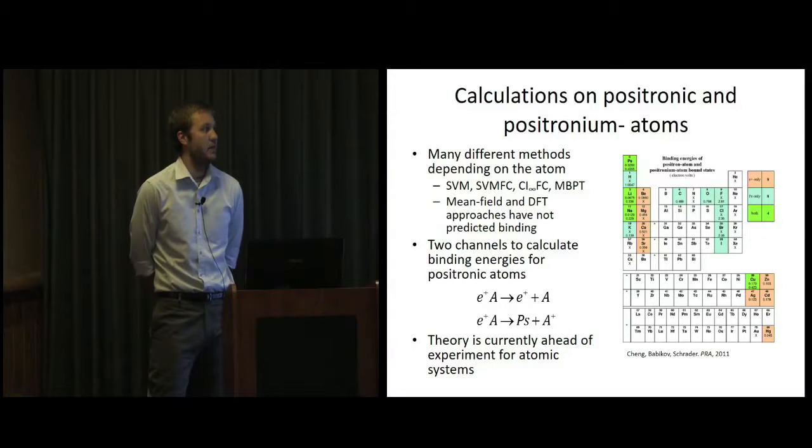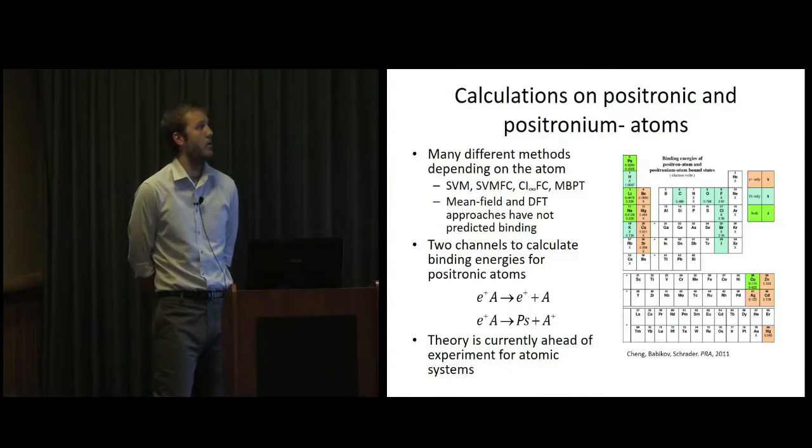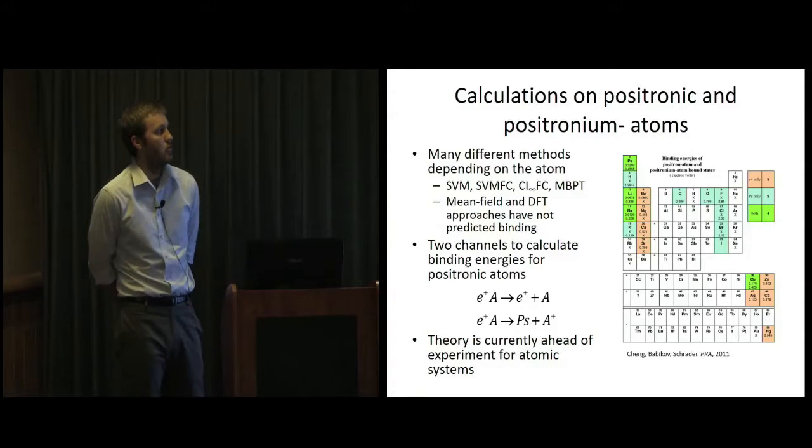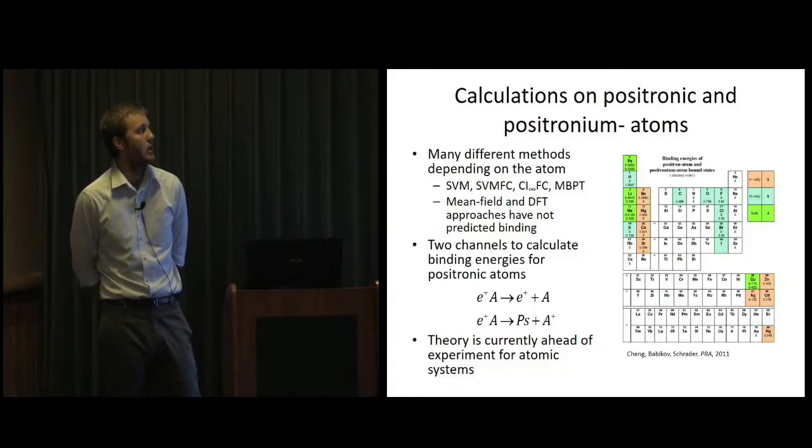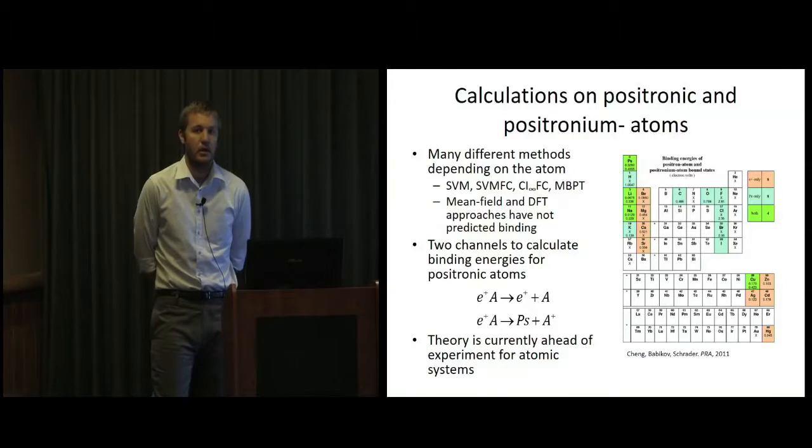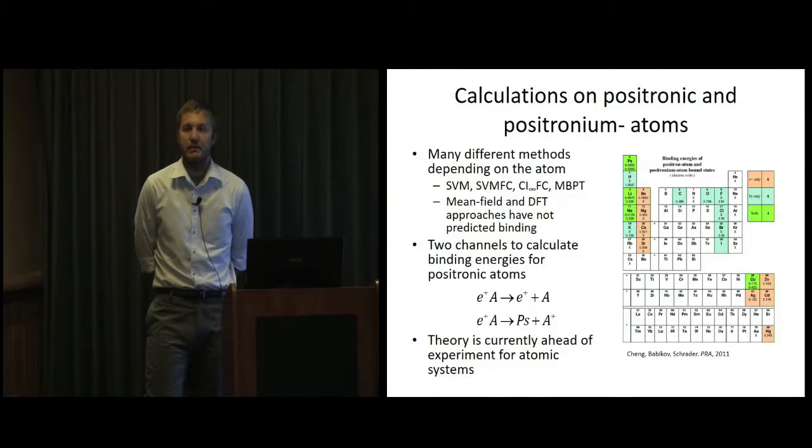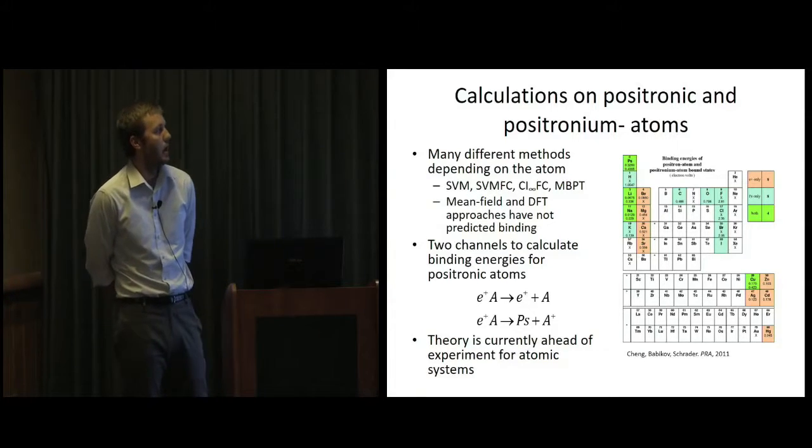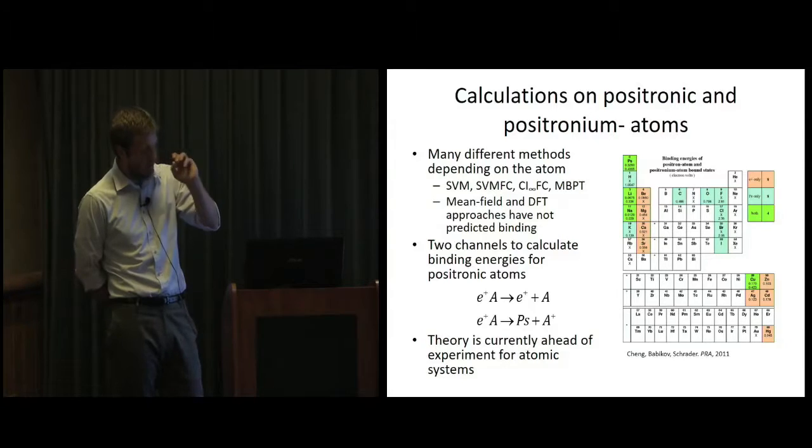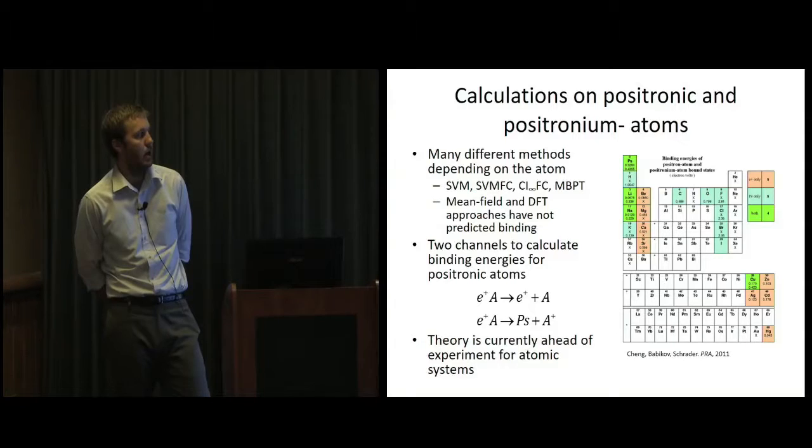Mean field and DFT approaches have not predicted binding, and we've even tried this recently in our group to see if they would, for positrons to atoms. Another thing to mention, so for the binding energies for positronium atoms, always decay into positronium and the neutral atom, but for positronic atoms, we actually have two decay channels. You can decay into the positron plus the neutral atom, or positronium plus the negatively charged atom. And so you have to check both of those. As far as experimental numbers, they don't really exist for these atomic type systems, and this is somewhere theories currently very much ahead of the experiments.